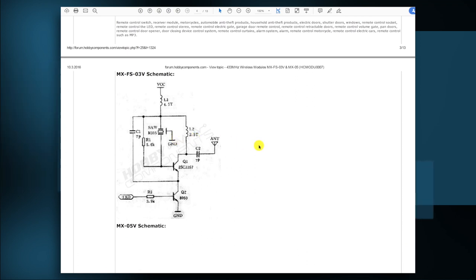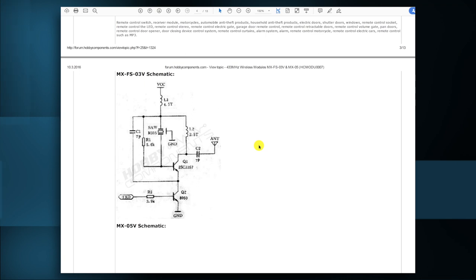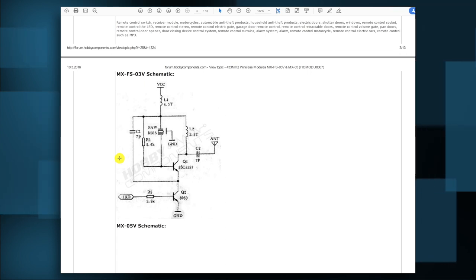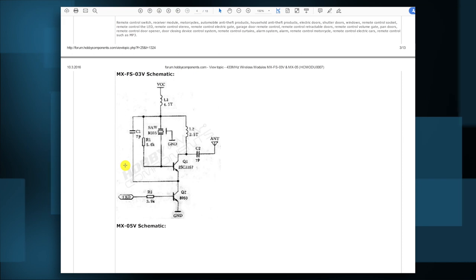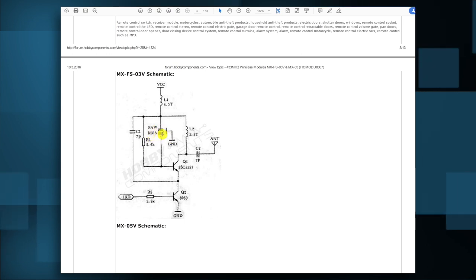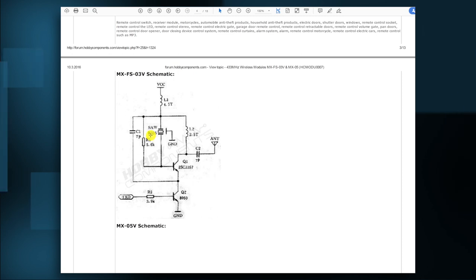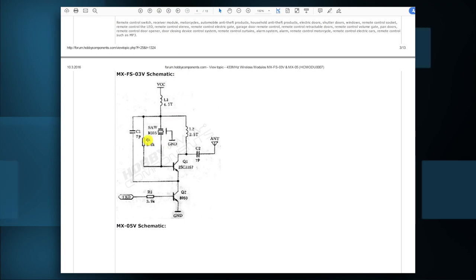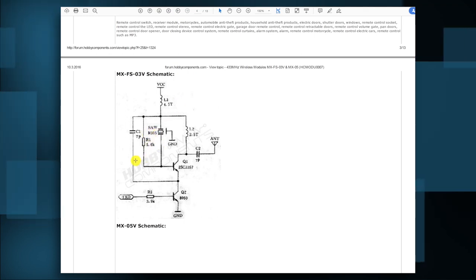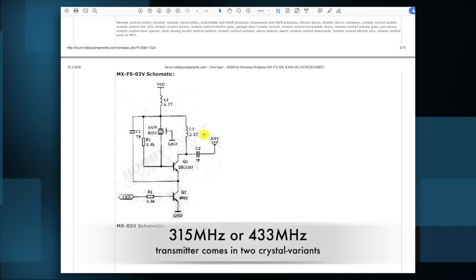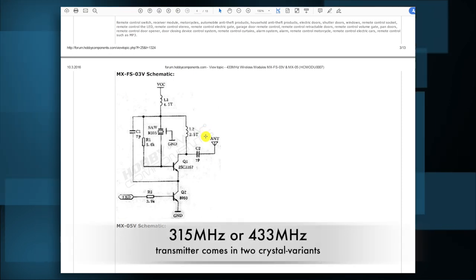Here we have the highly sophisticated electronic scheme of the transmitter, which is quite easy. Now I understand why these things are that cheap, because this is not exactly rocket science. This thing here is an oscillator with this crystal as a base. This crystal in this case is 315, which is interesting because it's the datasheet of the 433 megahertz wireless module, and in the scheme is a crystal of 315. So these things come in two types: either 315 megahertz or 433 megahertz.